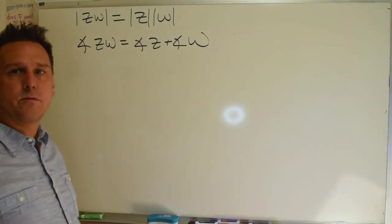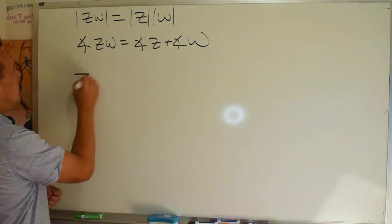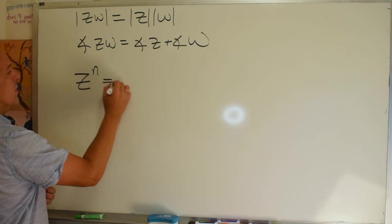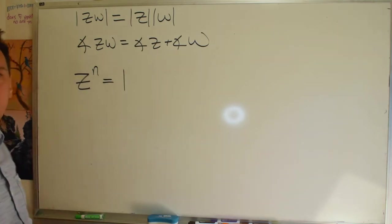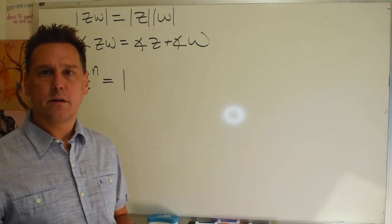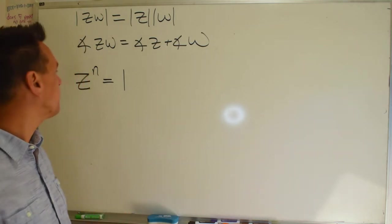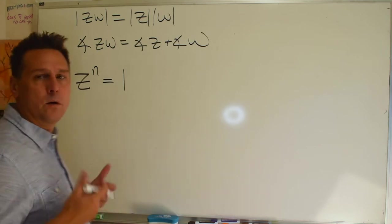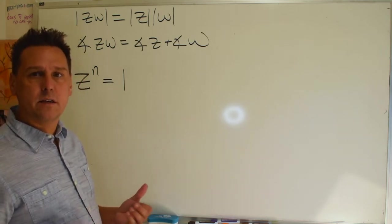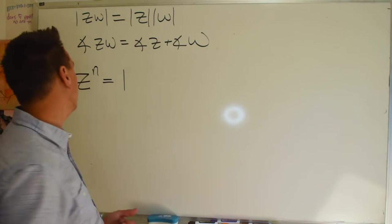Now let's go back to the roots of unity. We're looking for points Z in the complex plane whose nth power gives you one. And now we can ask what kind of number is Z in terms of its magnitude and in terms of its angle.